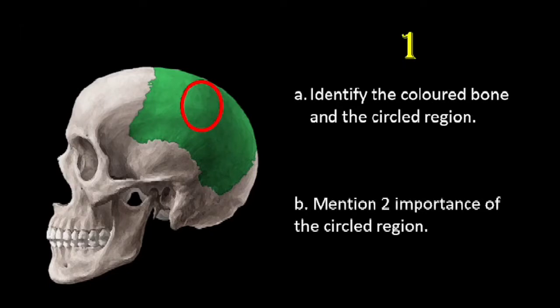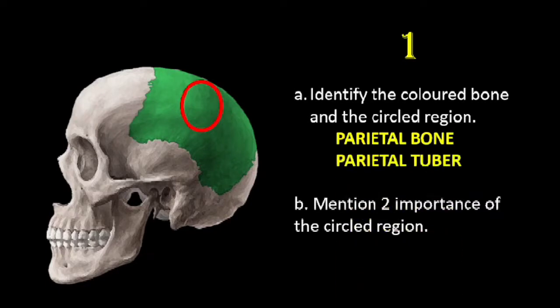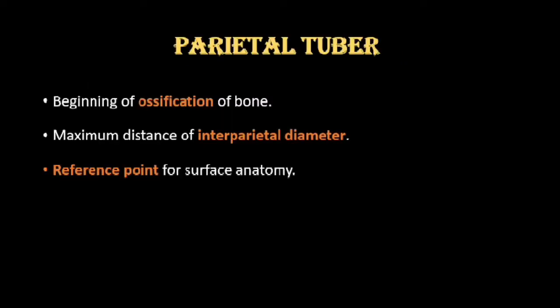The colored bone, as you all know, is the parietal bone, and the circled region is the parietal tuber. You have seen that the parietal tuber or the parietal tuberosity is the most prominent region over the parietal bone, and it has got many significances. One of them is that it marks the beginning of ossification of the bone.